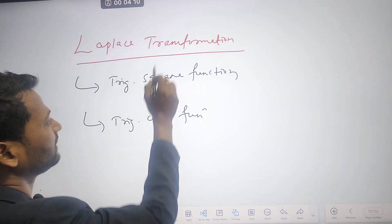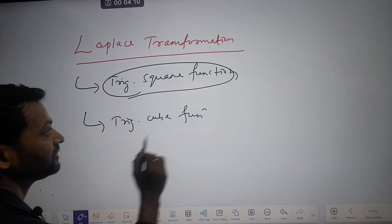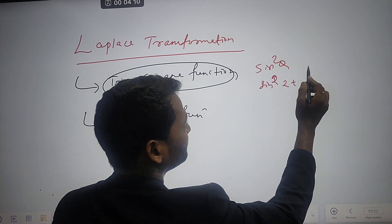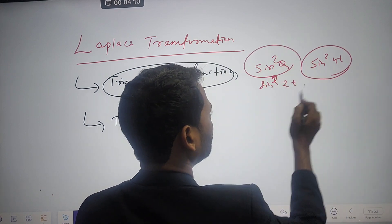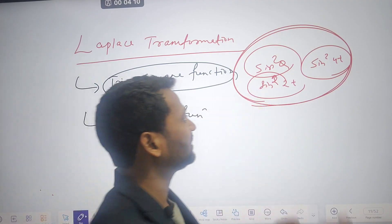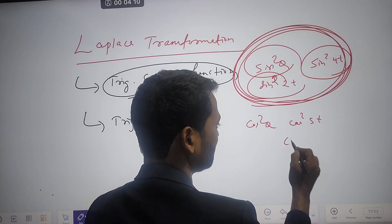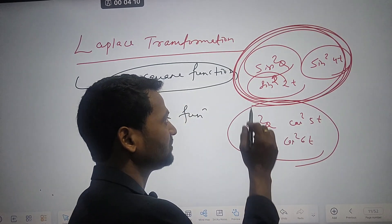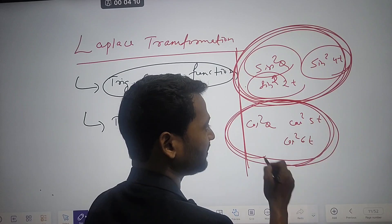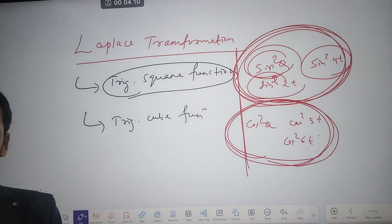In this lecture I will only focus on how to find out the Laplace transformation of square and cube functions by taking examples. Trigonometric square functions are like sin²θ — for example, sin²(2t), sin²(4t). There is no direct formula to get the Laplace transformation of sin²θ or cos²θ. So first we need to convert the square function into terms of sin or cos, then apply the Laplace transform.